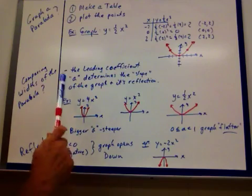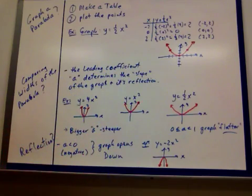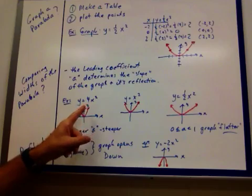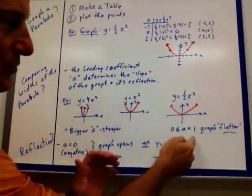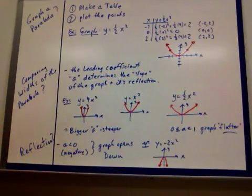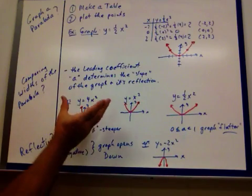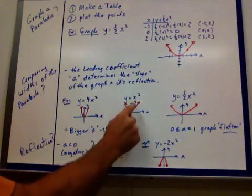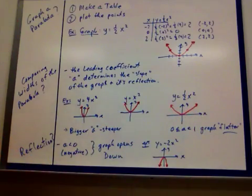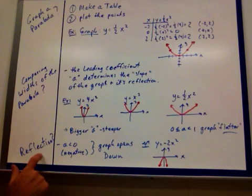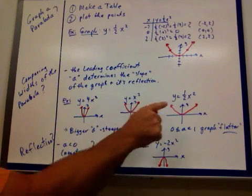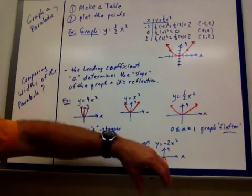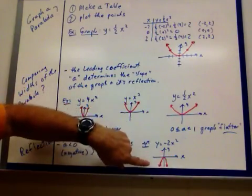Comparing widths of the parabola: the leading coefficient A determines what we call the slope of the graph and its reflection. The bigger A is, the steeper we're going to get our graph. When A is 1 that's your basic U, and when A is a fraction between 0 and 1, it flattens it out. The bigger A, the steeper the graph — you get a steeper U. The reflection: when A is less than 0 — negative — your graph always opens down. The bigger the negative, the steeper it gets, and if it's a fraction like negative one half, it would be flatter but definitely open down.